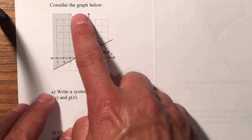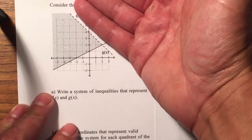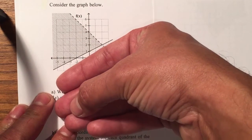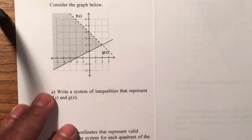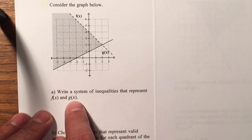Consider the graph below. They give you a system of inequalities, basically two inequalities that were shaded and they only kept the section that they intercepted. Letter A, write a system of inequalities that represents f of x and g of x.